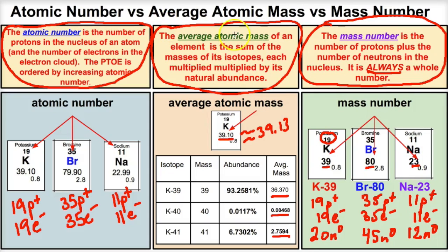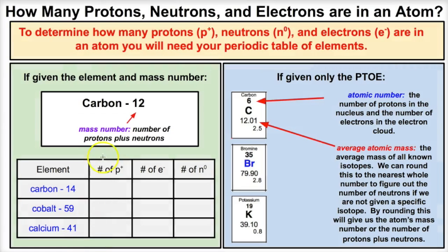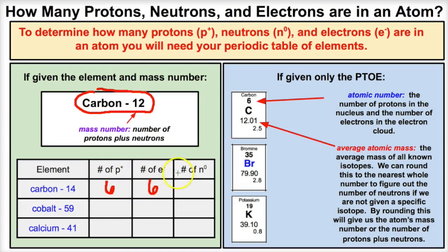What if you're given a specific isotope symbol, like carbon-12 or carbon-14? The element name tells you what it is, and the number that follows is the mass number — protons plus neutrons. For carbon-14: carbon is number 6 on the periodic table, so it has 6 protons and 6 electrons. To find neutrons, take 14 minus 6. Mass number minus atomic number always gives the number of neutrons.